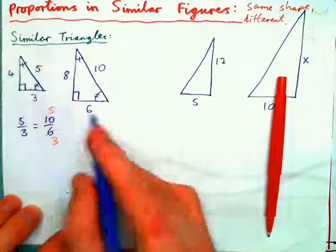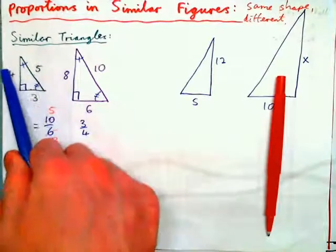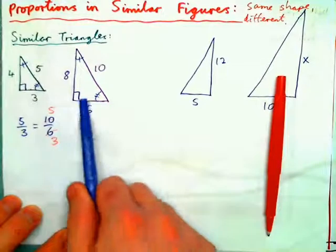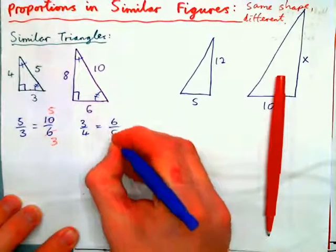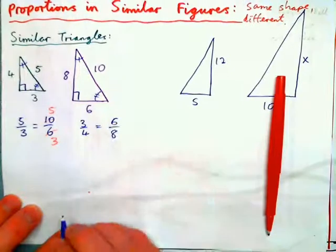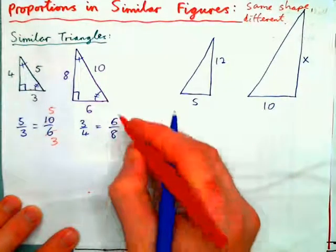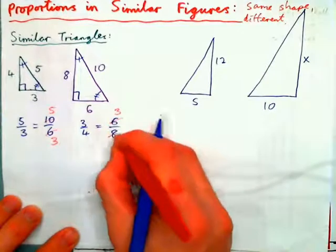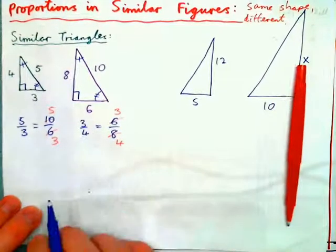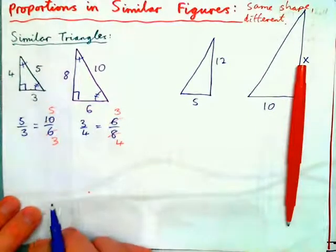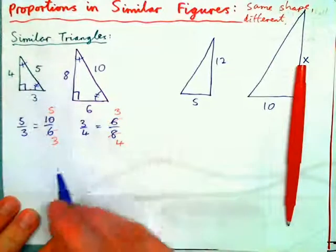We could do 3 over 4 — this side over this side — equals this side over this side, which is 6 over 8. If you put this in lowest terms, 2 into 6 equals 3 times, 2 into 8 equals 4 times, so we have 3 quarters equals 3 quarters. So there are all sorts of proportions we can find with these two.